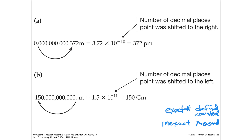Here are two examples. If I have 3.72 times 10 to the negative 10 — 3.72 meters — that's a very awkward unit. So instead of writing 0.0000000000372 meters, it would be easier to express it as 3.72 times 10 to the negative 10, or 372 picometers, rather than writing out all those zeros.